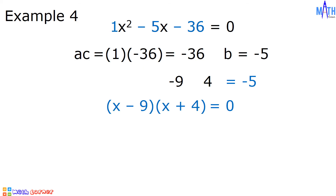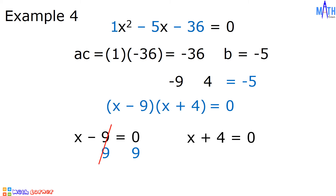By the zero-factor property, we have x minus 9 is equal to zero, and x plus 4 is equal to zero. In x minus 9 is equal to zero, we add positive 9 to both sides: x is equal to 9. In x plus 4 is equal to zero, we add negative 4 to both sides: x is equal to negative 4. The values of x are positive 9 and negative 4.